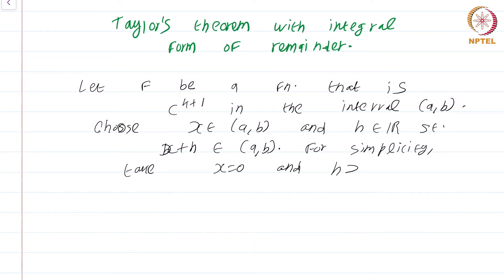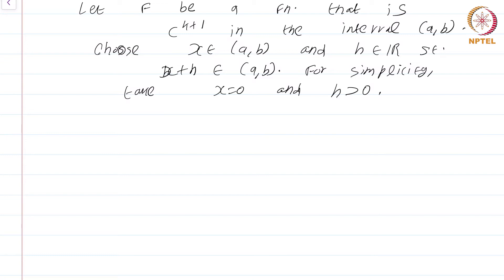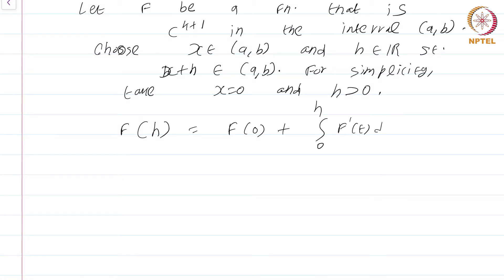The argument that follows does not crucially depend on these simplifications, but the notation will become significantly simpler. What we are about to do is derive the value of f at the point h in terms of the value of f at the point 0. The fundamental theorem of calculus immediately gives that f(h) = f(0) + integral from 0 to h of f'(t) dt.